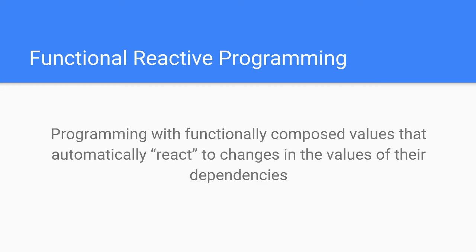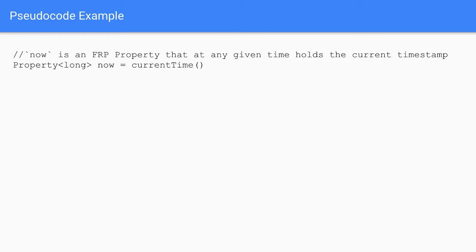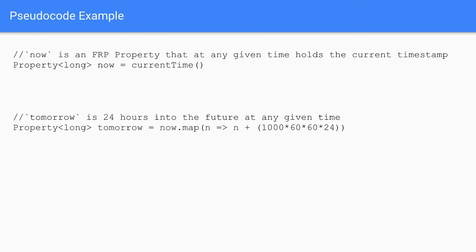So, what is FRP? This is my definition: programming with functionally composed values that automatically react to changes in the values of their dependencies. For an example, let's say we define some variable called 'now', and it's an FRP property that we get from some current time function. What 'now' is, is not just the current time when this line executes — it represents the current time whenever you access it. From that, you can create another property that represents 24 hours into the future at any given time. You would map over the 'now' property with a function that adds 24 hours worth of milliseconds to it, and that gives you a 'tomorrow' property.